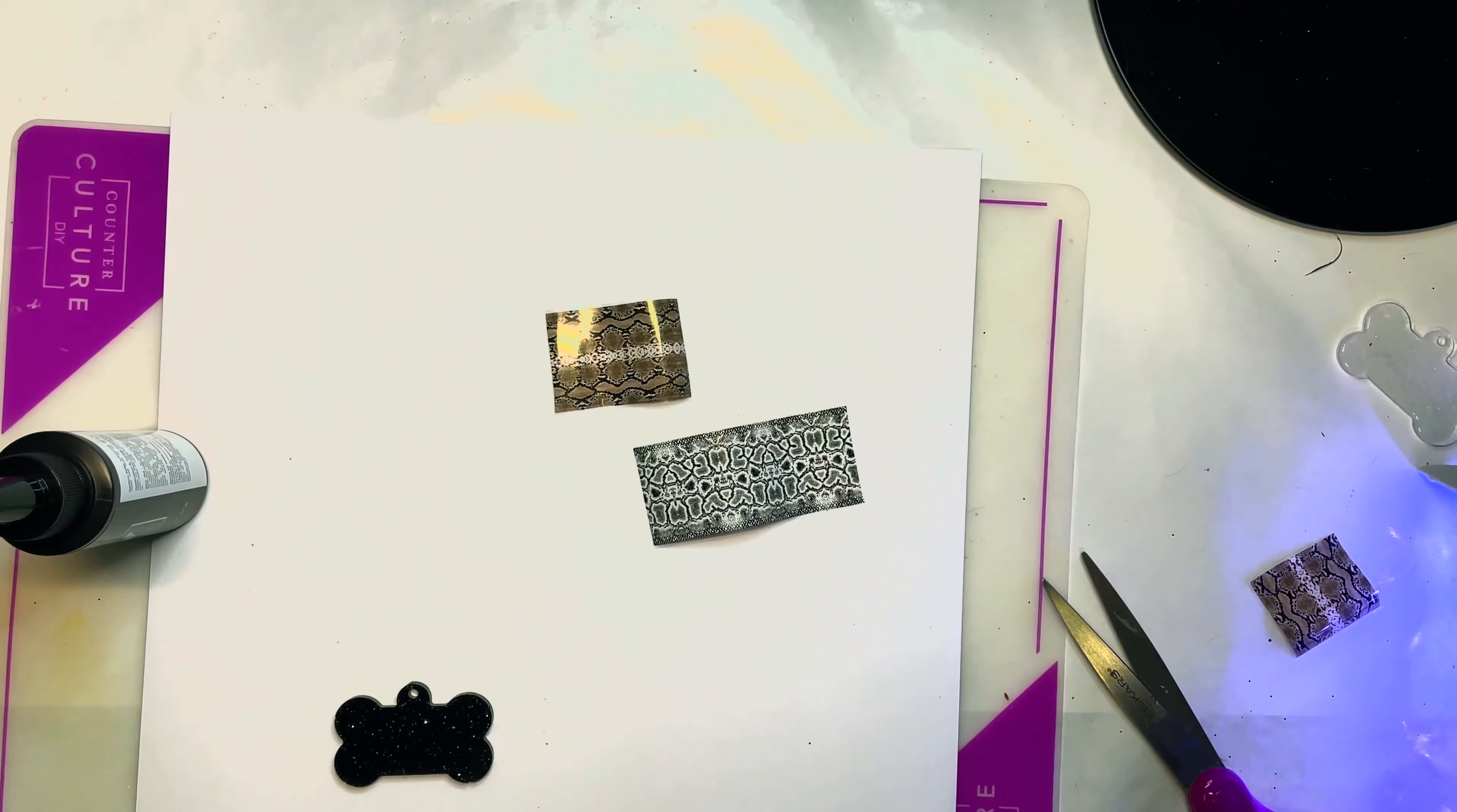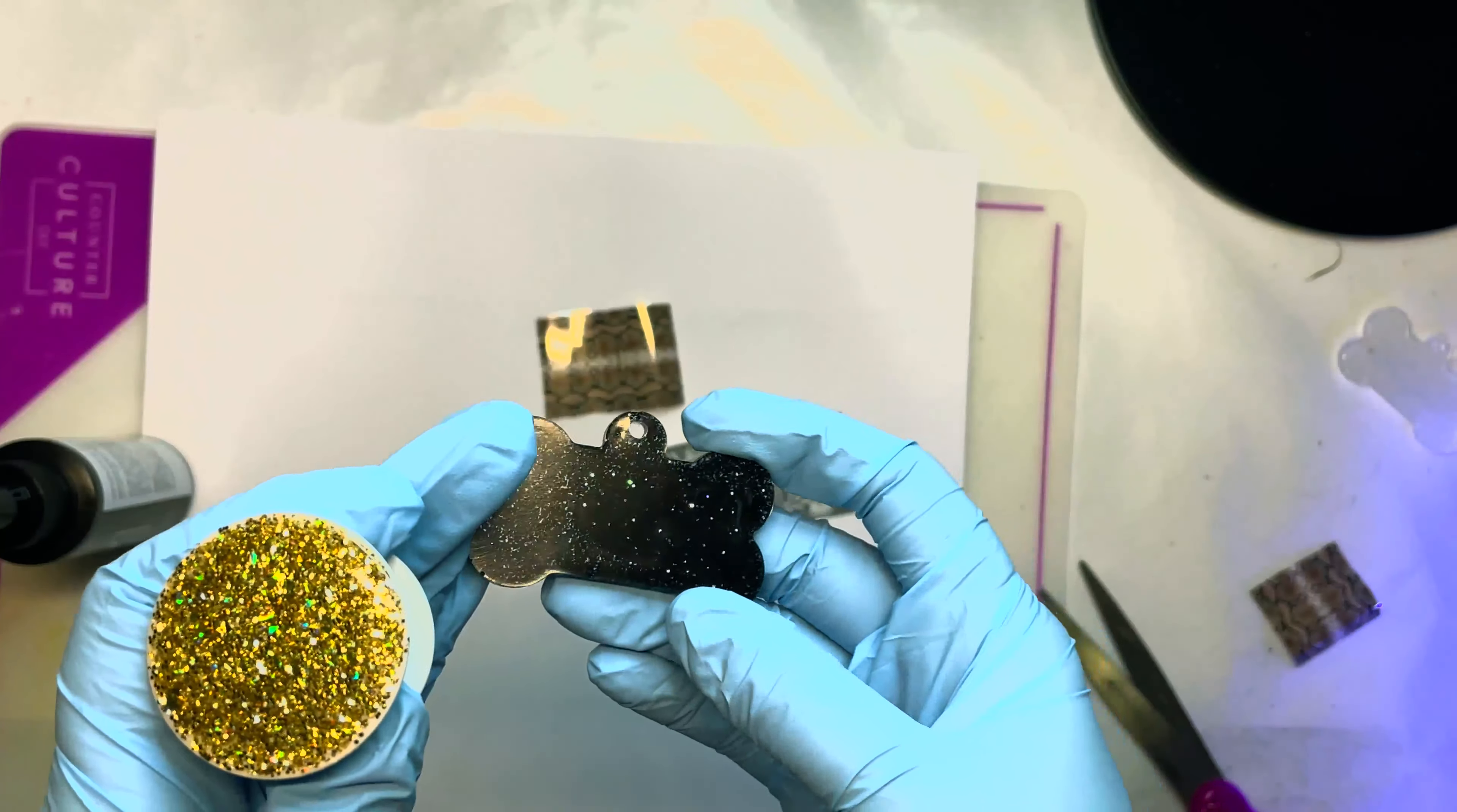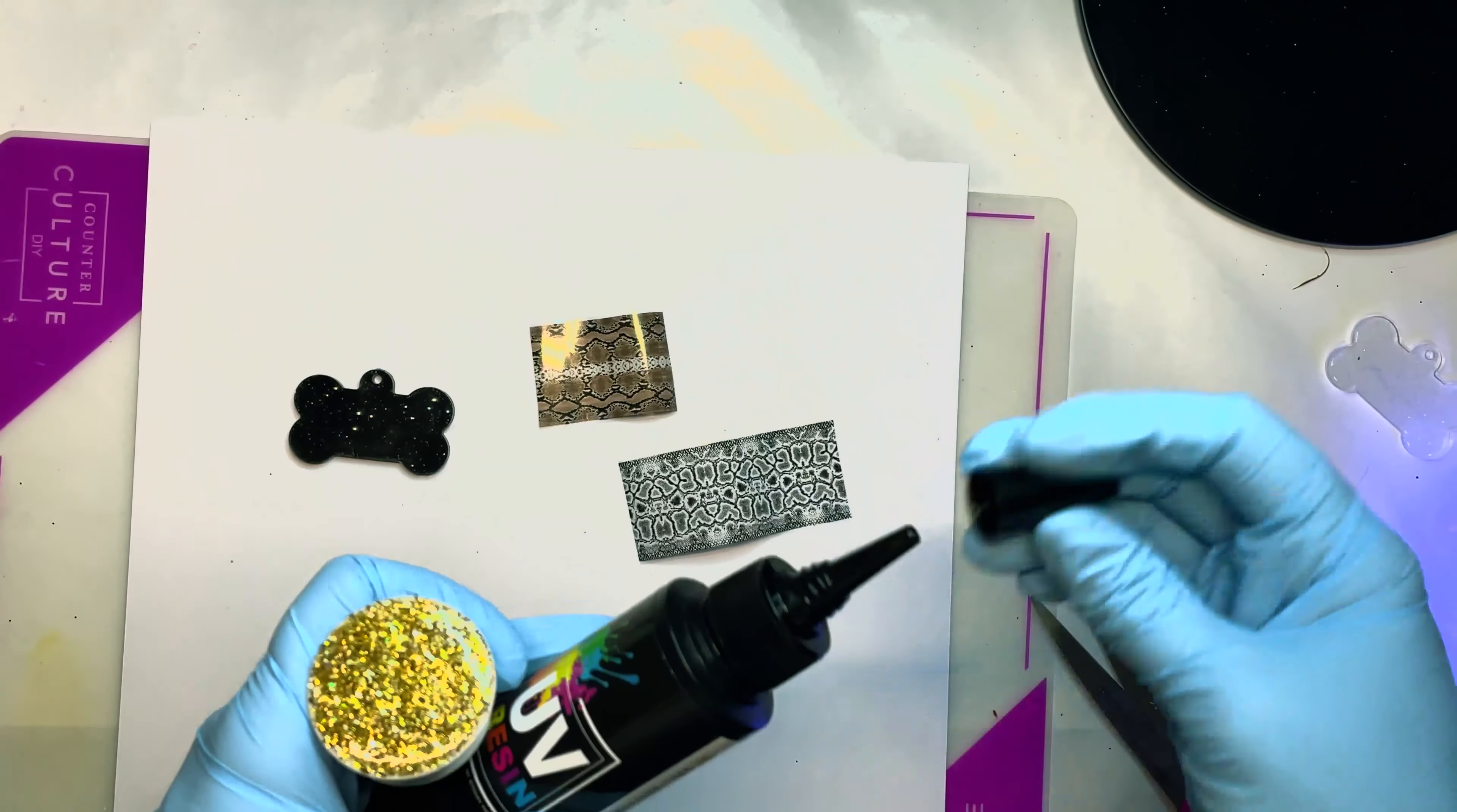I did a gold base on this phone grip. You need some Counterculture UV resin, your UV light—I have mine on and ready to go, I just press and hold the button and it stays on. I have my phone grip and this mold pour, which is just my extra epoxy when I epoxy cups. I pour it into molds so I don't waste epoxy.